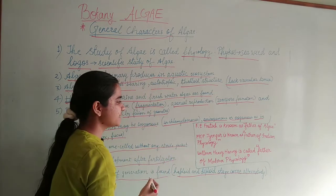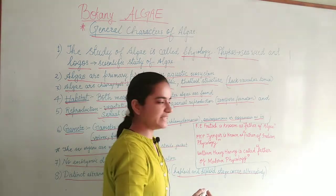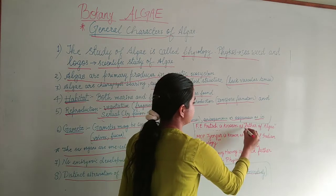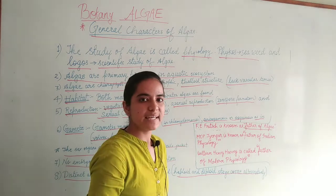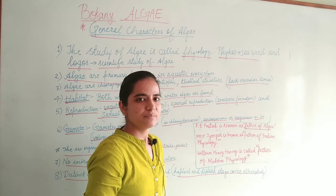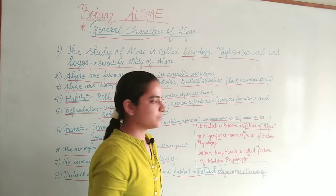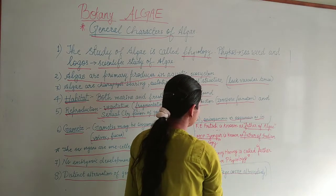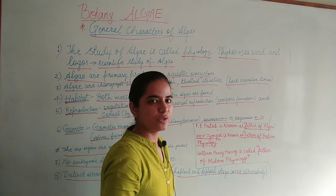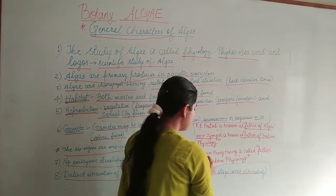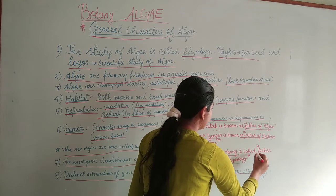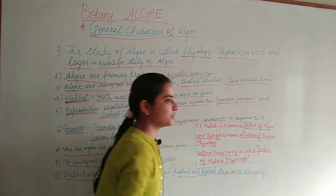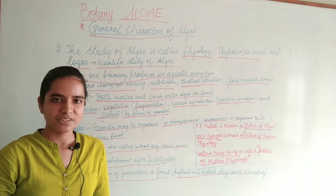Now let us study about some scientists related to algae. Fritz is known as the father of algae because he classified algae into 11 categories based on different criteria. M.O.P. Iyengar is known as the father of Indian phycology — he studied mainly about Spirogyra. William Henry Harvey is called the father of modern phycology. These were the general characteristics of algae — thank you.